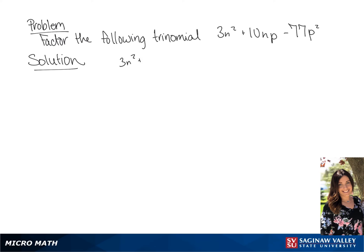So we're factoring 3n squared plus 10np minus 77p squared. We're going to break this up into two binomials. We have 3n.